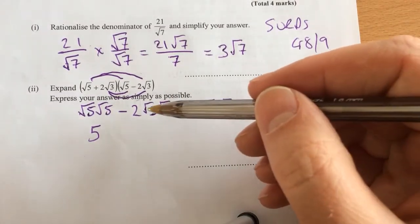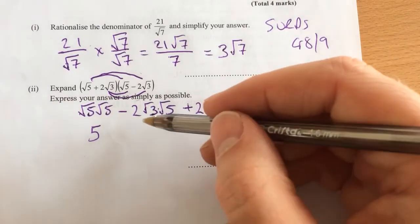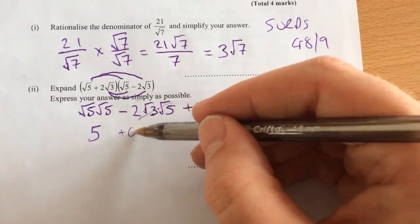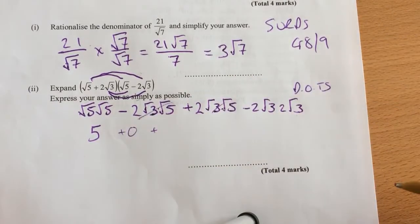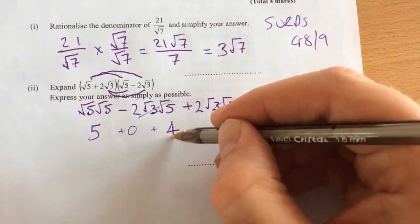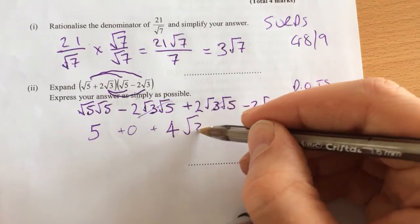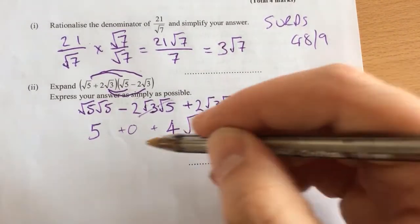They cancel each other out because they're the same thing. 2 root 15, 2 root 15. So they cancel. And then what happens with these last terms? We can times those 2's together to get 4. Okay, and then we've got root 3 times root 3, which is just the same as 3.